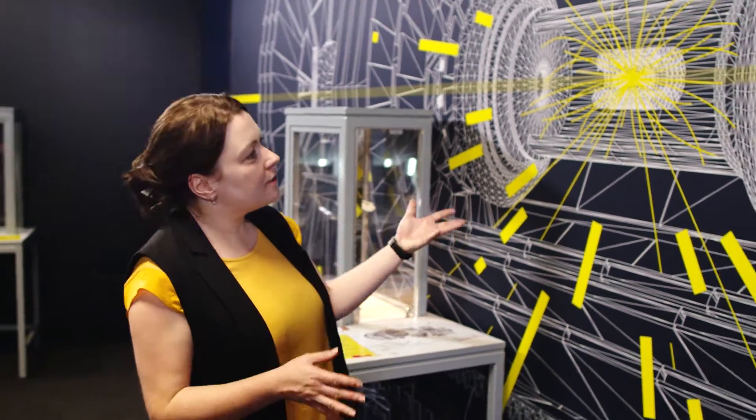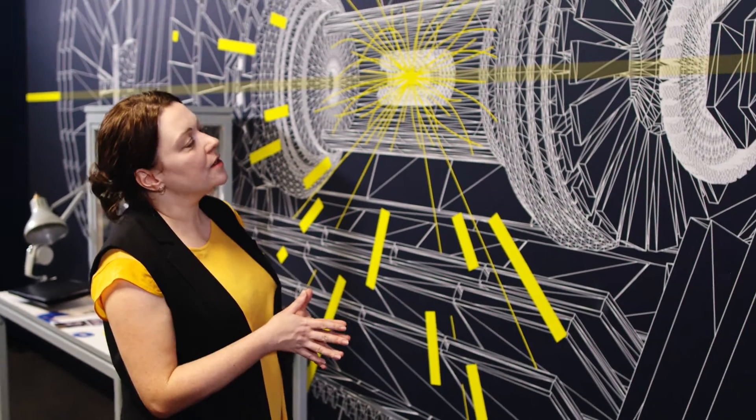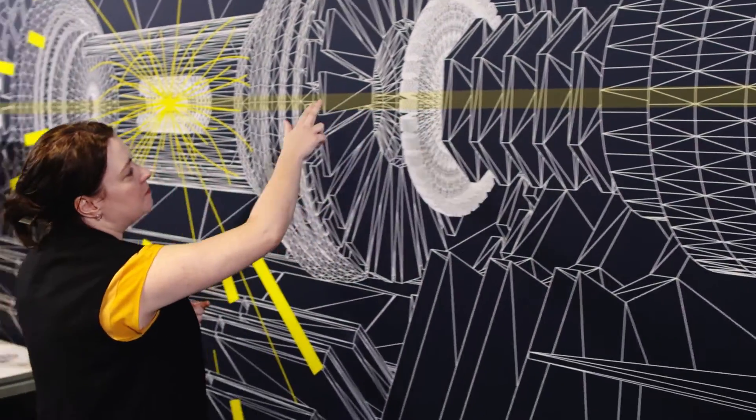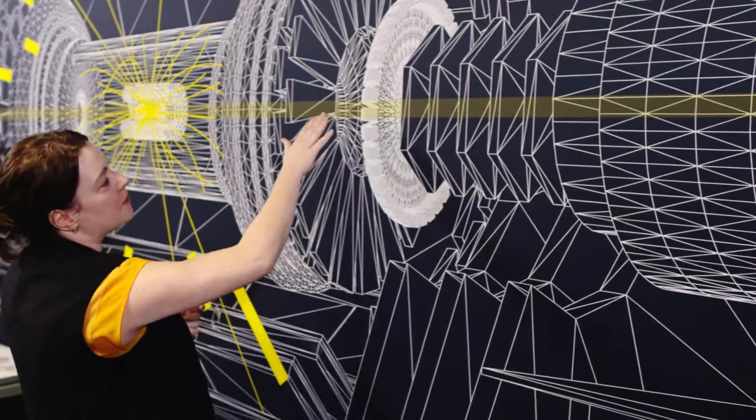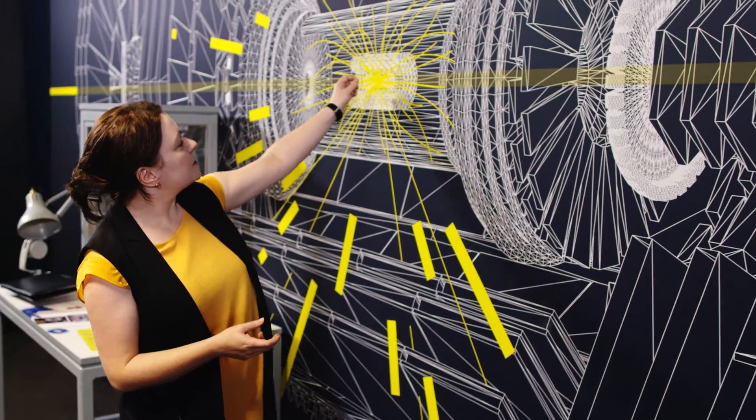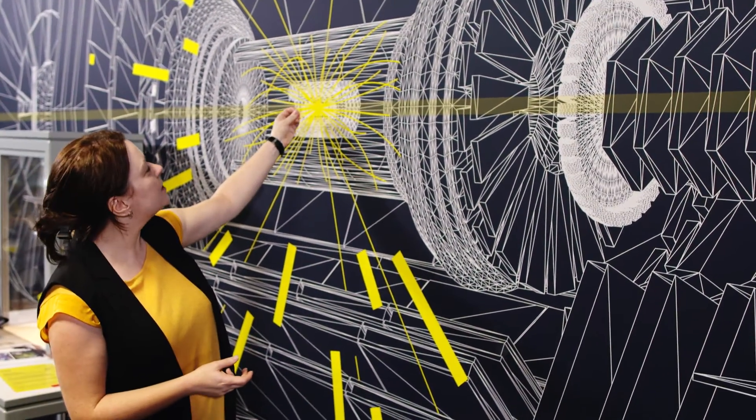This is a schematic of CMS, the second biggest detector on the LHC ring. The particles go around the LHC beam line indicated here by the thick yellow bar, and then inside the four detectors the particles collide at the very center of the detectors.